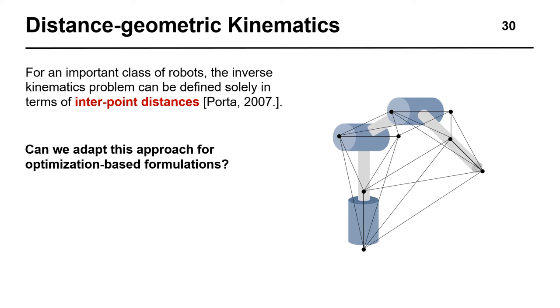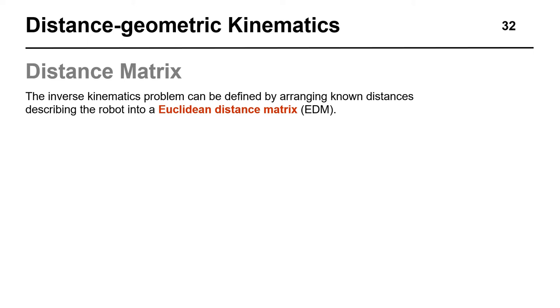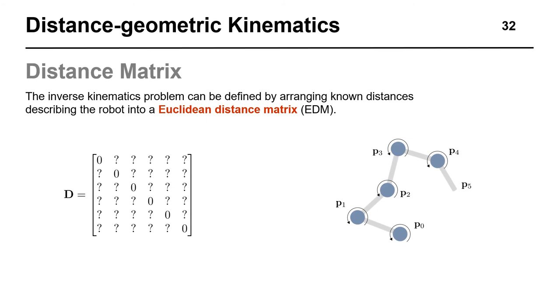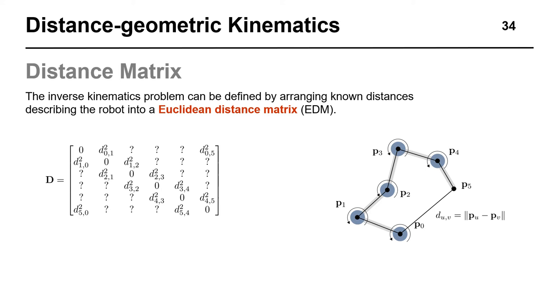The key to answering the first question is obtained by arranging distances into the so-called Euclidean distance matrix. To illustrate this procedure, we can define a simple unconstrained inverse kinematics problem for the open planar kinematic chain on the right. On the left, we can see that only the diagonal elements of the Euclidean distance matrix corresponding to the points' distances from themselves are zero. Since we know the link lengths, we can fill out the off-diagonal terms with the square distances describing the robot's structure. Next, we can set a position goal for the end effector by fixing its distance to the base joint and filling out the corresponding elements in the Euclidean distance matrix.